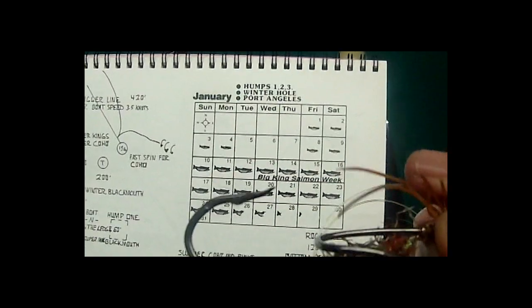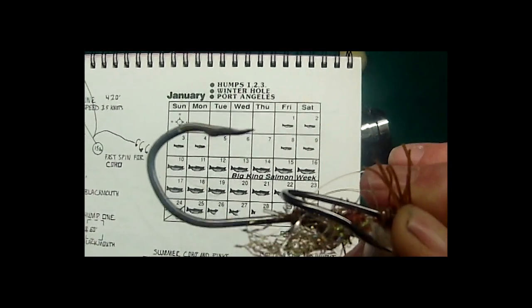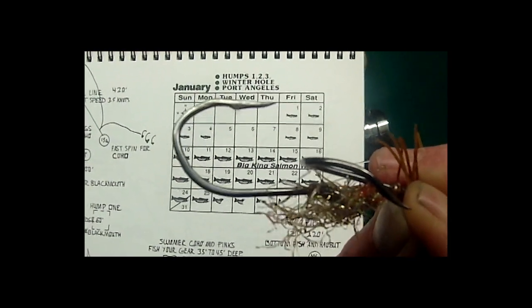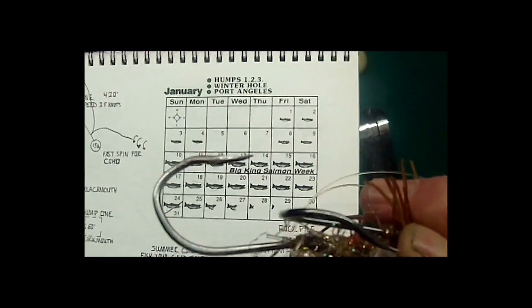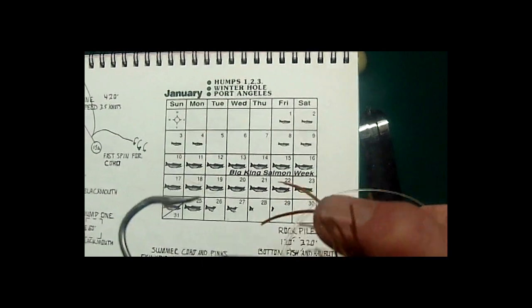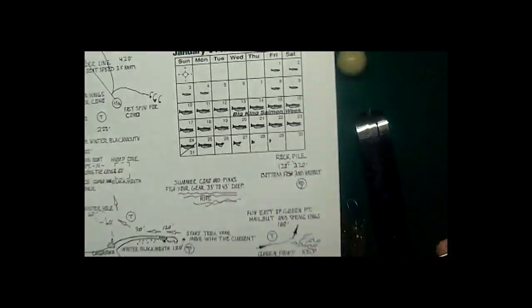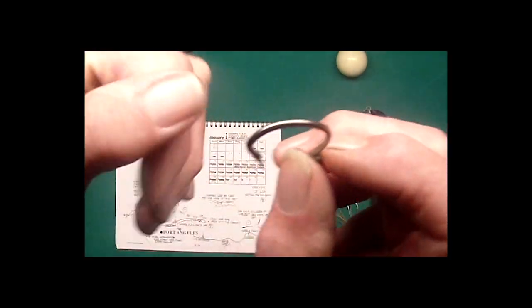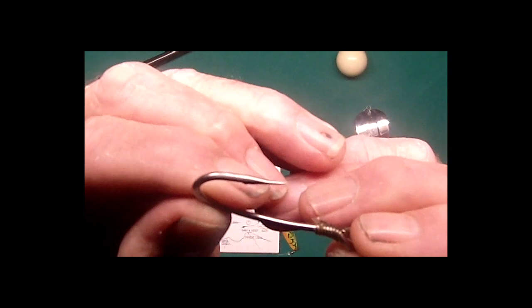Yeah, the Dr. T Hokey hook. Now this is a Mustad 92553 stainless steel XLT, meaning extra long tip. You don't want just the XL, you want that extra long tip. Because when I showed you the hook in the opening shot on my thumb—see that point, see that length there? That makes a big difference.